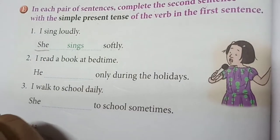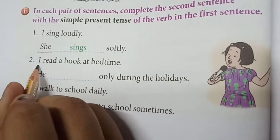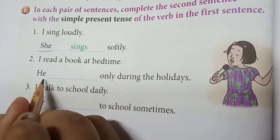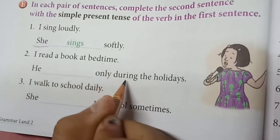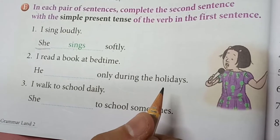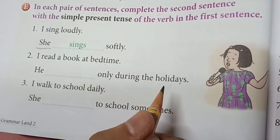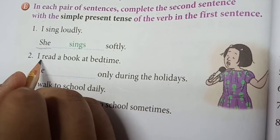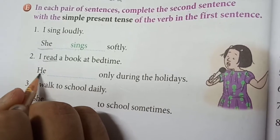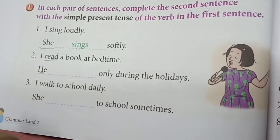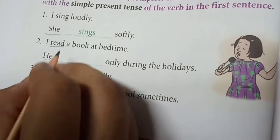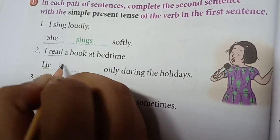Now moving to the next example. 'I read a book at bedtime. He dash only during the holidays.' Students, first find the verb. 'Read' is the verb. Here the first word is 'he', so we have to add s. So 'read' becomes 'reads'.